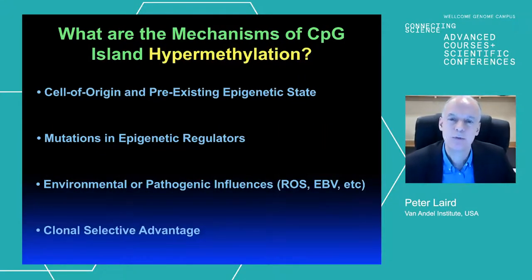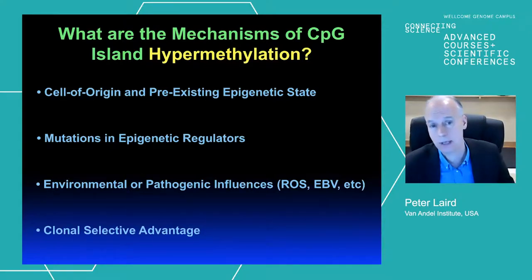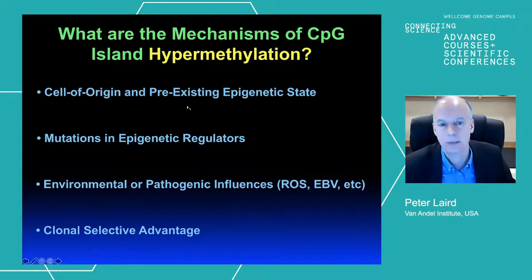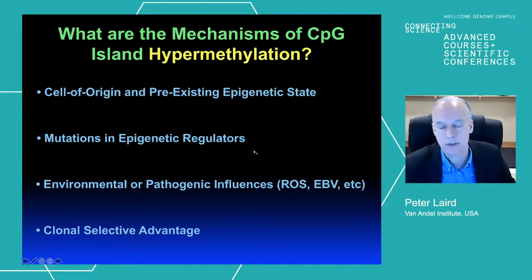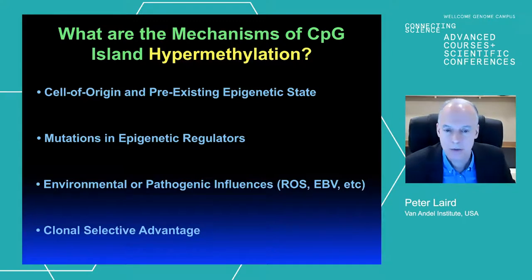Now I'll switch gears to the other half of the story: the mechanisms of CpG island hypermethylation. I'll touch on the cell of origin, the pre-existing epigenetic state, mutations in epigenetic regulators such as H3K36 trimethylation—for example, NSD2 mutations in human cancers cause increased DNA methylation in gene bodies—and environmental and pathogenic influences including reactive oxygen species, inflammation, Epstein-Barr virus, and the gut microbiome. And if you silence an important cancer-relevant gene like BRCA1 or mismatch repair gene MLH1, that can provide a clonal selective advantage.